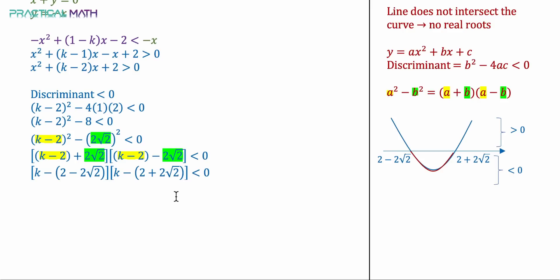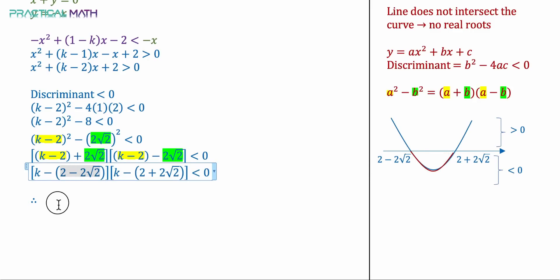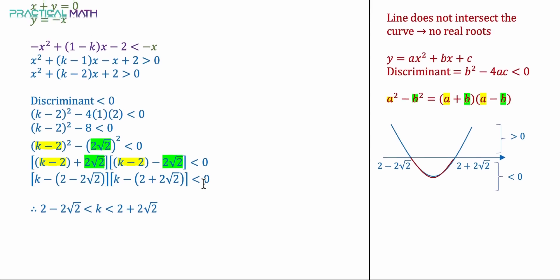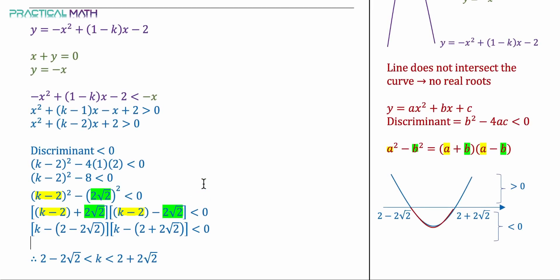Therefore the range of k satisfying the inequality is 2 minus 2 root 2 less than k less than 2 plus 2 root 2. This is the complete answer to the question.